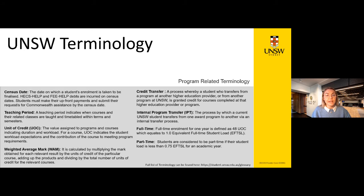A common question is what a WAM is. Your WAM — Weighted Average Mark — is calculated by multiplying the mark obtained for each relevant result by the units of credit of that course, adding the products, and dividing by the total number of units of credit for the relevant courses. Courses that have no numerical mark and have letter grades are not calculated towards your WAM, however they may affect your academic standing. You can refer to the UNSW grade definitions for more information.